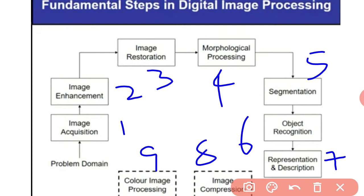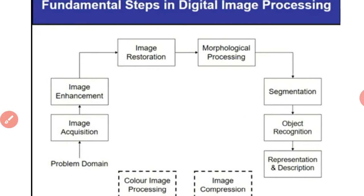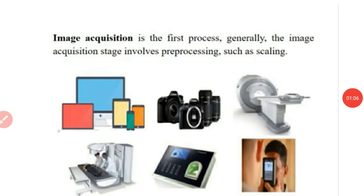First, we define the problem domain — the area from which we capture a picture using a mobile camera, digital camera, or CCTV camera. Using different types of embedded equipment, we determine what kind of information we want from the image. This is the initial step: the problem domain. Now we discuss image acquisition.